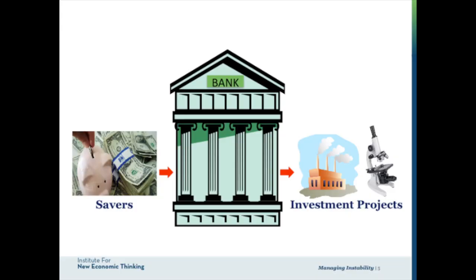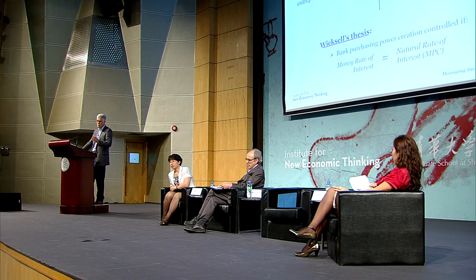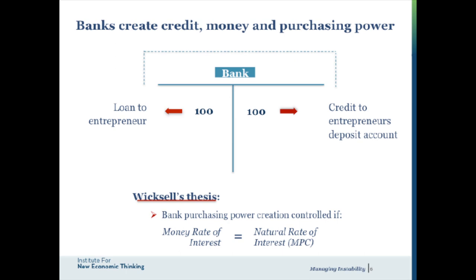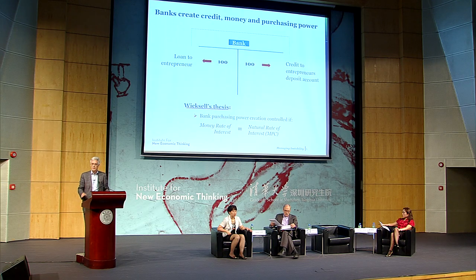I want to focus on the role of banks, and I want to start by saying that the description of banks as taking money from savers and lending it to investment projects is wholly inadequate. A person who realized this was a Swedish economist called Knut Wicksell, who wrote in the 1890s and 1900s. He realized that banks don't just take pre-existing money and invest it — they create purchasing power. When a bank makes a loan to an entrepreneur or to a state-owned enterprise, at the moment it makes that loan it both credits and debits simultaneously, creating purchasing power.